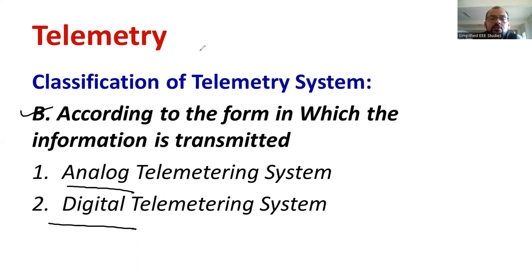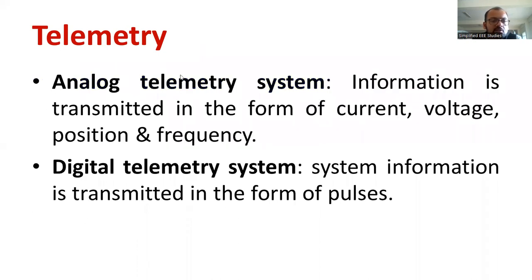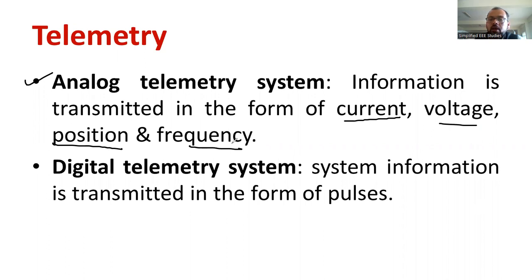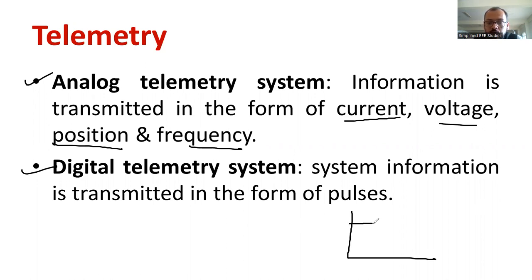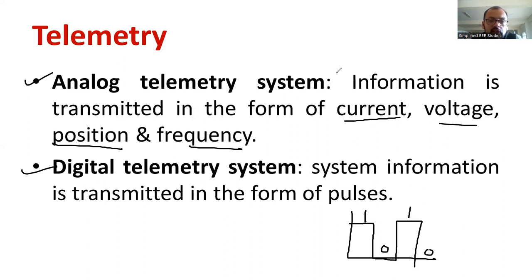Knowing the difference between analog and digital will be helpful here. In the analog telemetry system, the information is transmitted in the form of electrical quantities such as current, voltage, position, and frequency — it is a continuous form. In the digital telemetry system, the information is in the form of pulses — high and low, or one and zero. One represents high and zero represents low. This is known as the digital telemetry system.